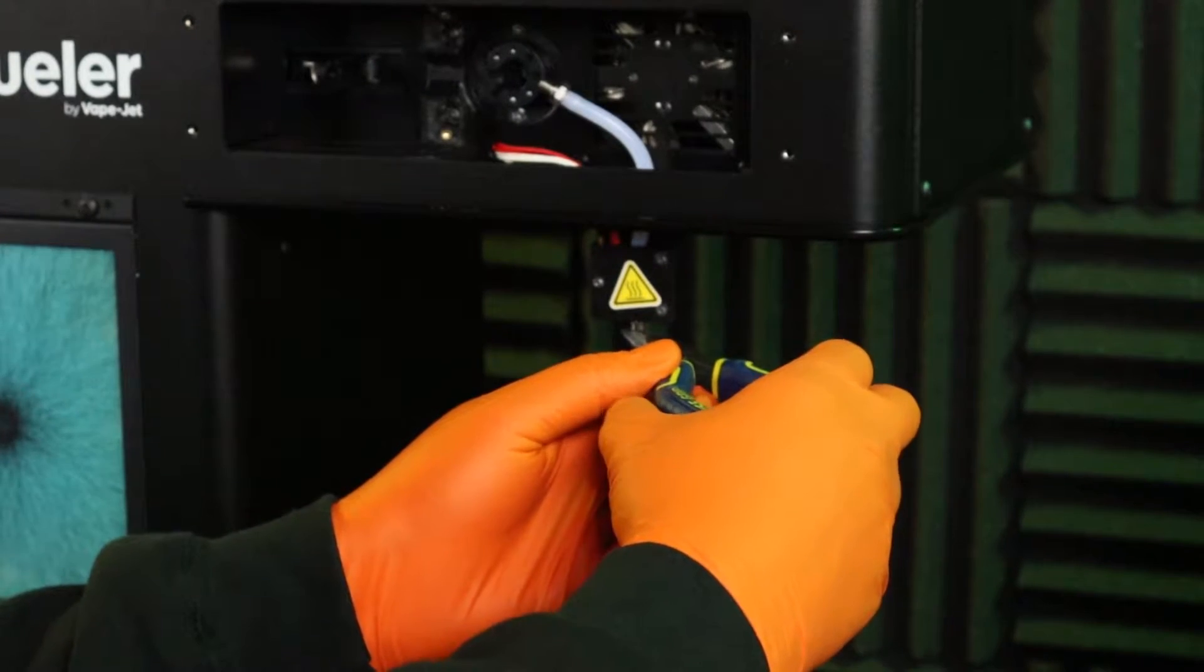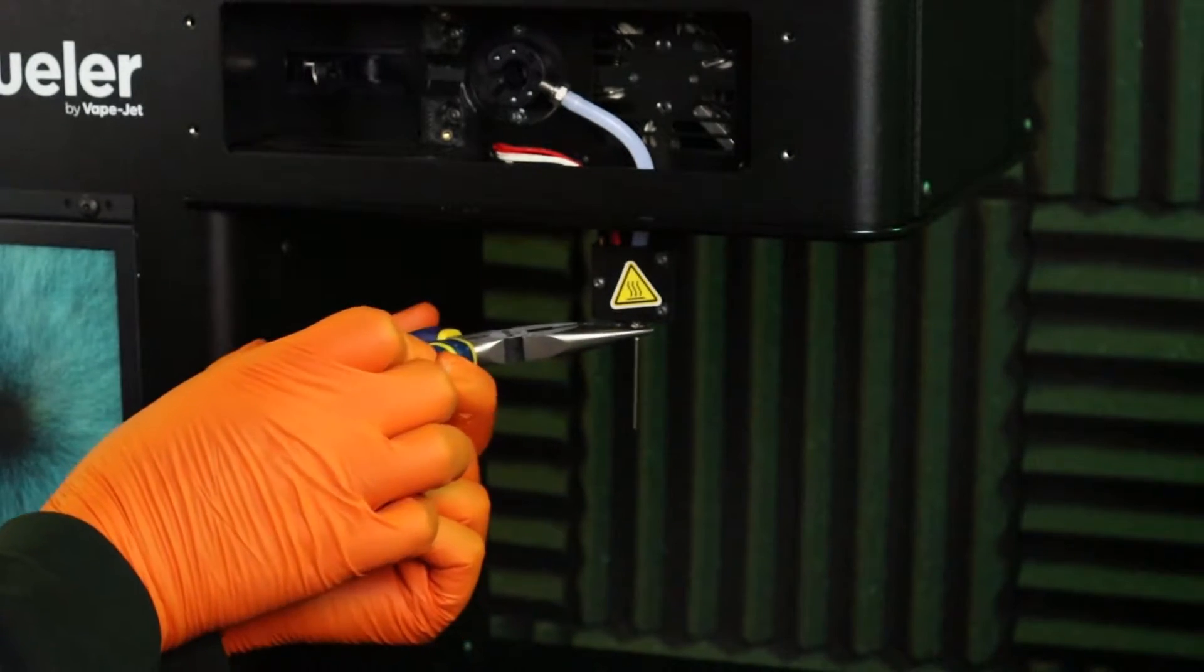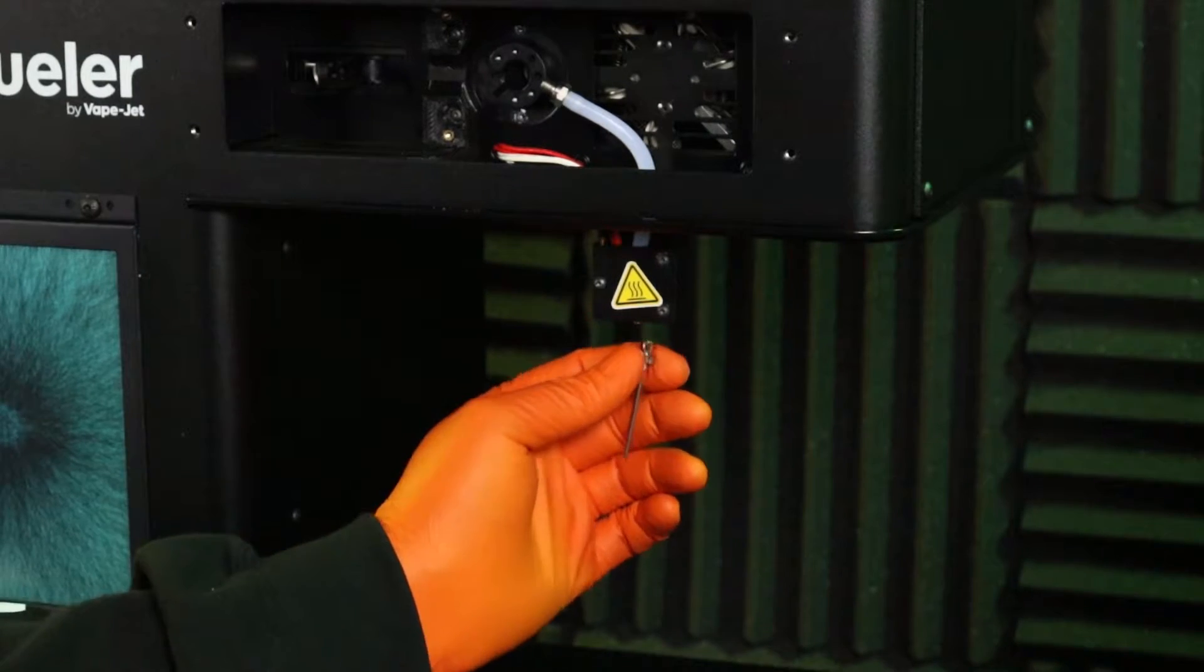Using the needle nose pliers, carefully loosen and remove the needle from the lure lock heat block by turning the base counterclockwise if you're looking up from the end of the needle. Place the needle in the beaker with the valve and the syringe.